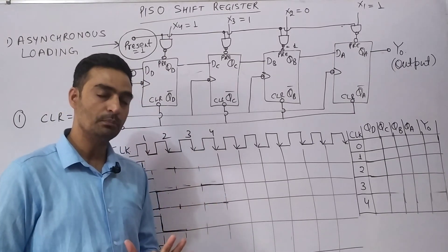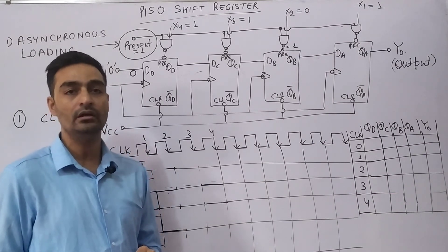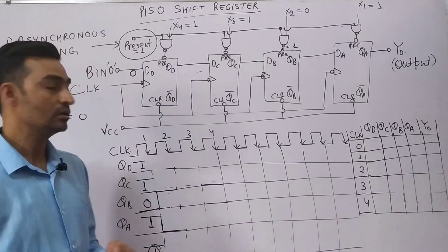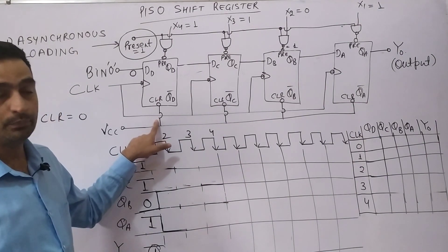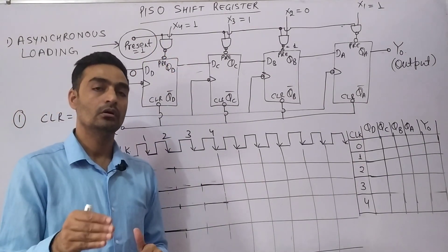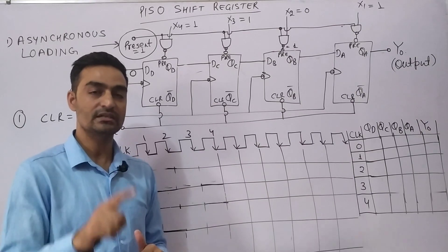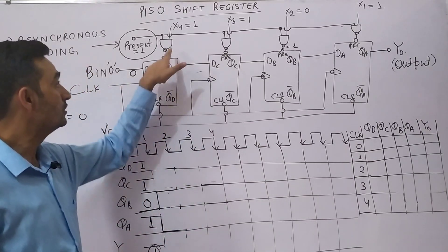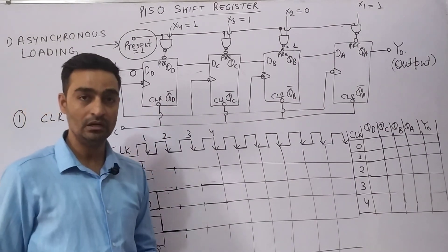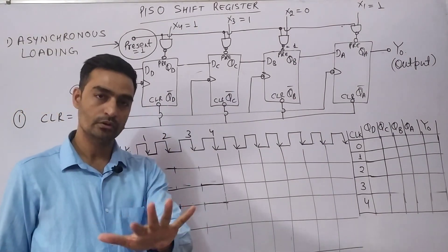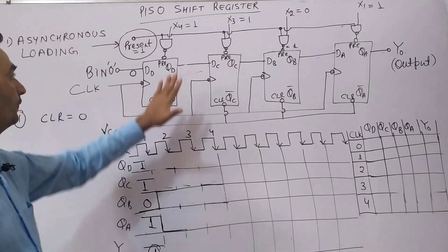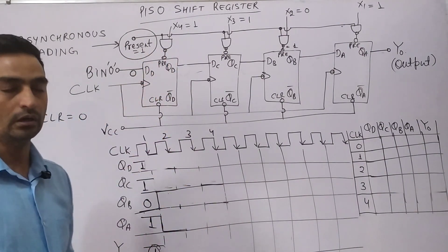Whether the clock is coming on the input side or not, the output data of the flip-flop will be changed depending upon the clear pin and preset pin. The preset pin always sets the output to 1 as and when 0 is given to it, and when 0 is given to the clear pin, output of the flip-flop goes to 0. This is our basic understanding of how a flip-flop works.